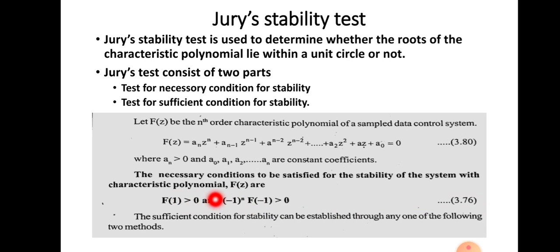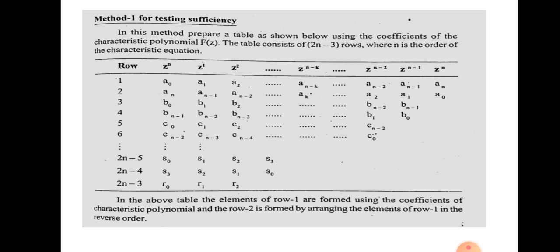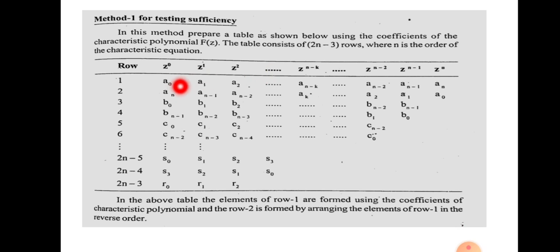Once the necessary condition is checked, we have to ensure the sufficient condition for stability. We can check sufficiency using two methods. In Method 1, we form a table with 2N - 3 rows, where N is the order of the characteristic polynomial. We place Z^0, Z^1, ... up to Z^N along the top, and write the coefficients AN, AN-1, AN-2, ... A0 in the first row.